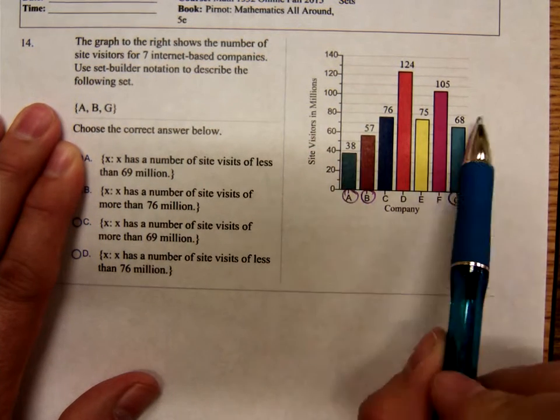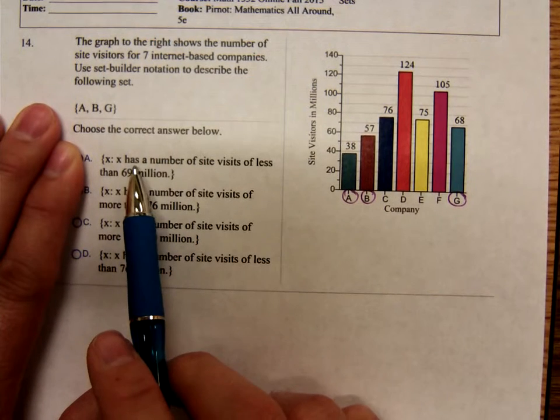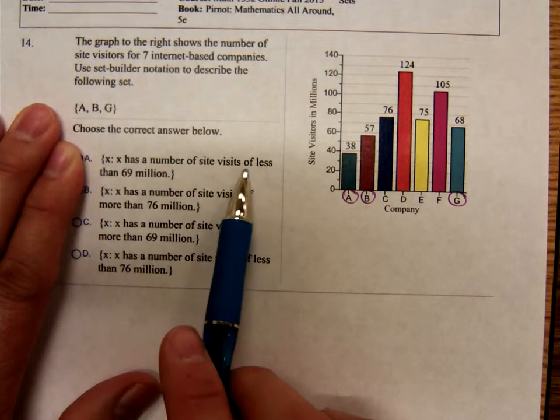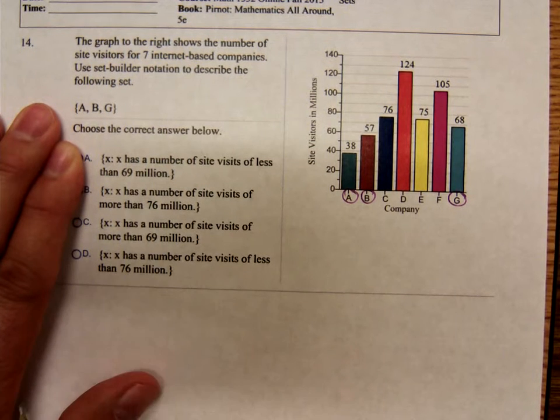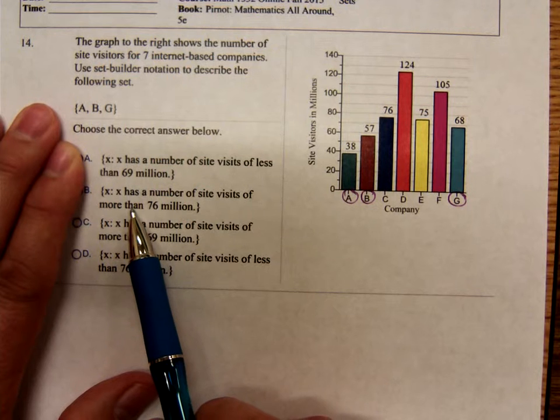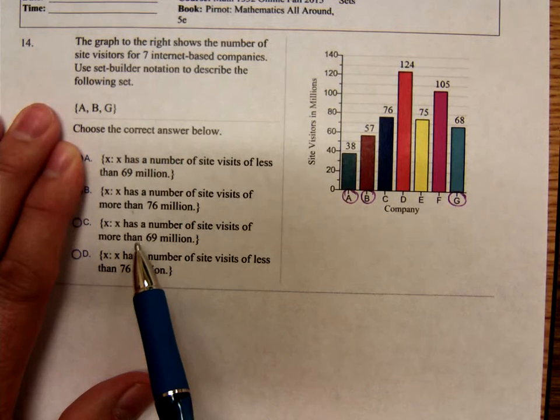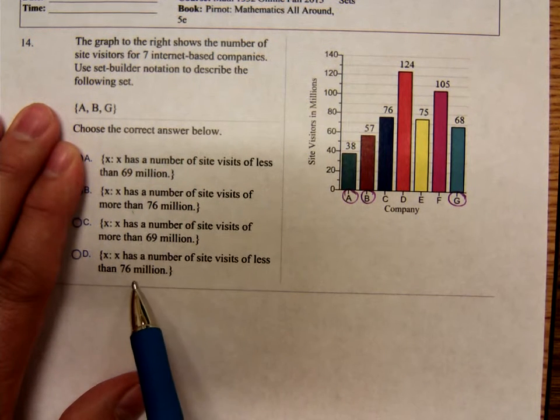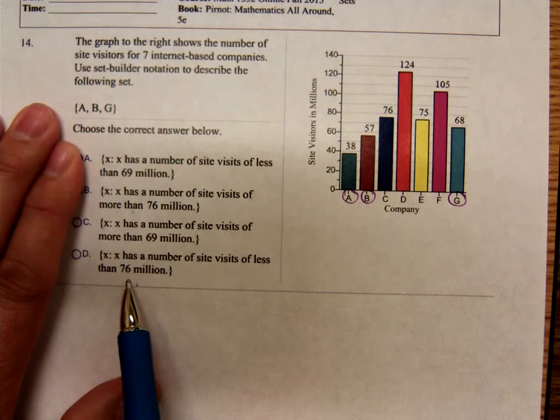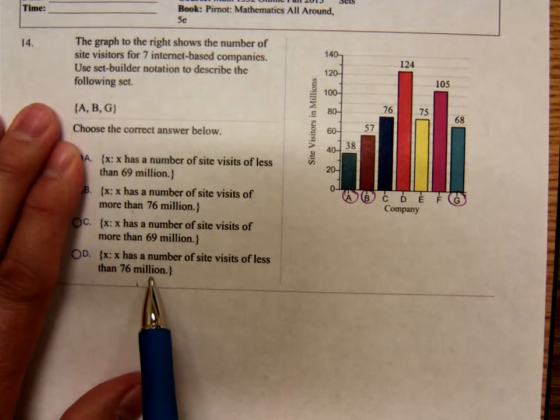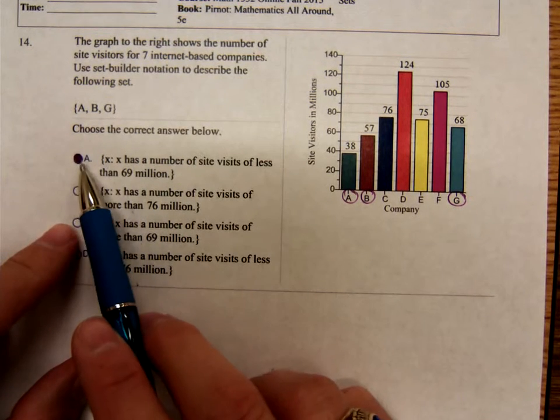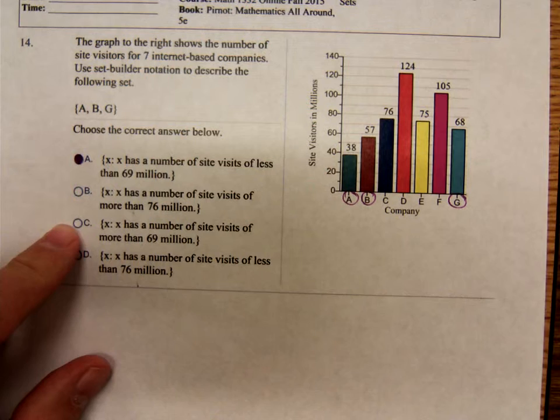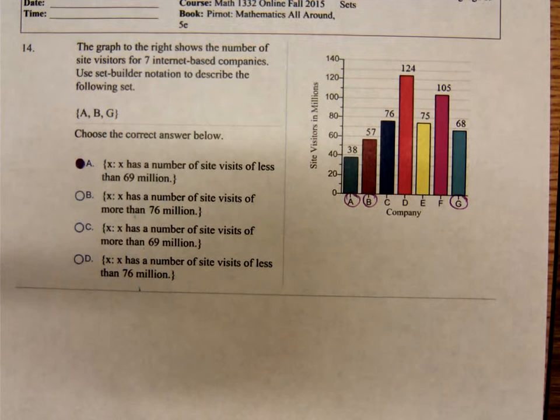38, 57, 68. Set of all X such that X has a number of site visits of less than 69. Yeah, those are less than 69. They're sure not more than 76 million, or more than 69. They are less than 76 million, but in particular, they're less than 69 million. So A, that's number 14.